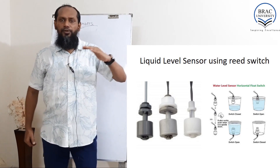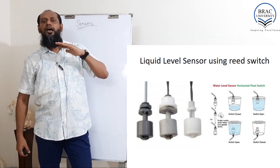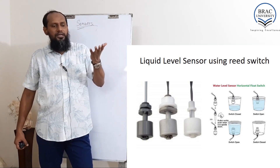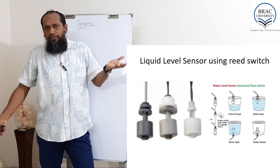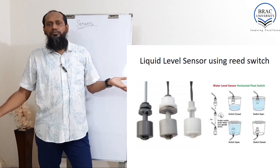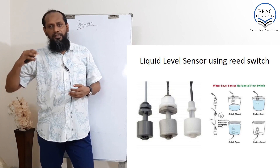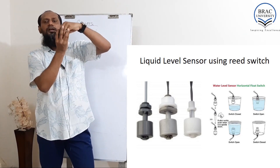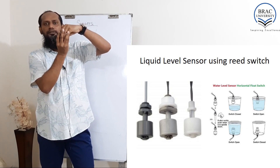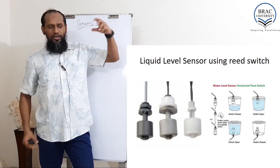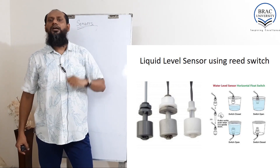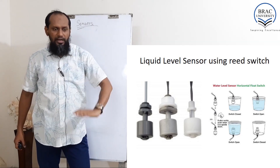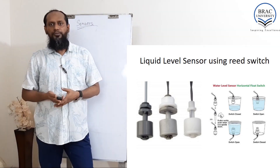If we place sensors at different levels, we can measure different levels of water or liquid. If we use this kind of sensor inside our water tank, we can make an automatic water pump. When the water becomes full inside the tank, the reed switch turns on and we can make a control system so that the motor switch turns off. By using sensors at different levels, we can also measure different liquid levels.